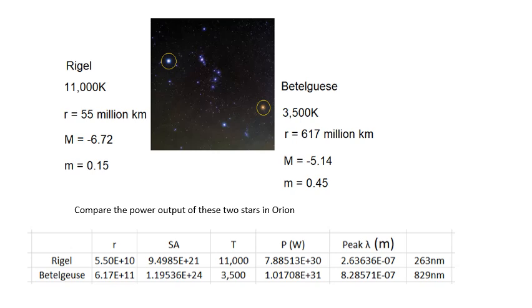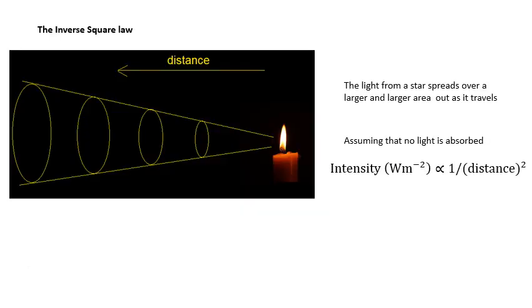Now there's another law that we need to know: the inverse square law. The light from a star, as it spreads out as it gets further and further away, then it covers - the same amount of energy covers a larger and larger area as it travels outward. Now assuming that none of this light is absorbed - and bear in mind, you know, some of it will be absorbed if it's inside a galaxy or whatever, there's all kinds of dust and rubbish in there which can absorb some of the light - but assuming that no light is absorbed, then the intensity, this is watts per meter squared, the intensity will be proportional to one over the distance squared.